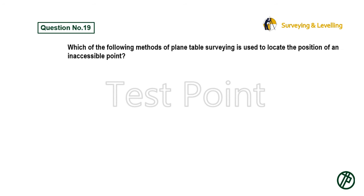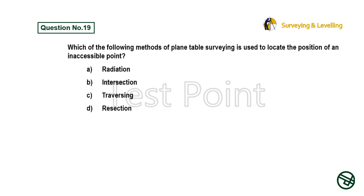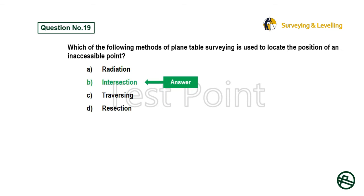Question 19: Which of the following methods of plane table surveying is used to locate the position of an inaccessible point? Option A: Radiation. Option B: Intersection. Option C: Traversing. Option D: Resection. Answer is Option B: Intersection.